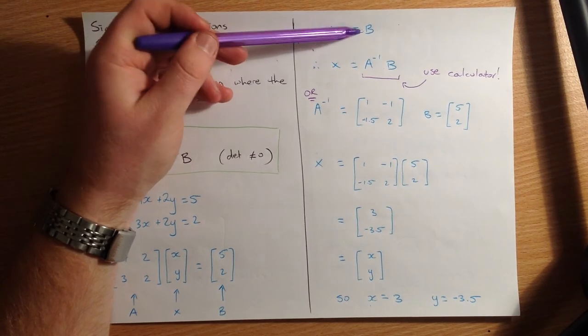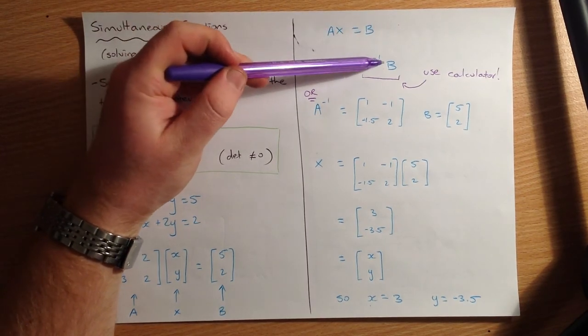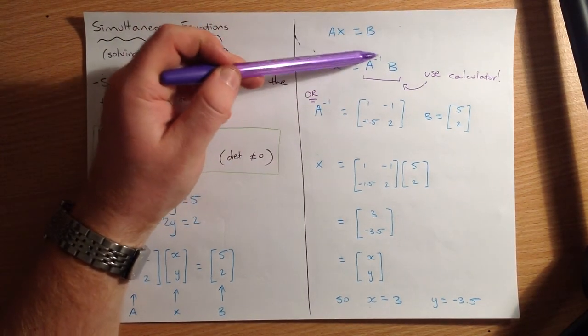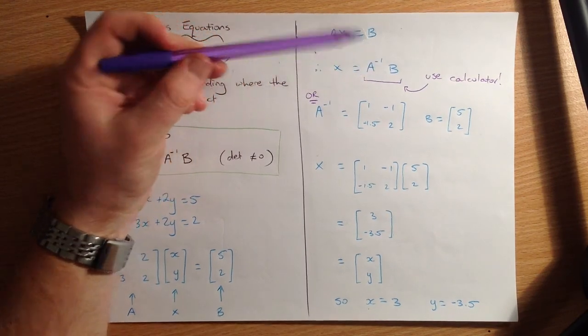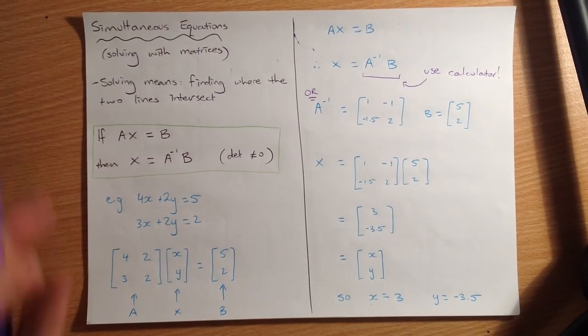So for instance, if I have AX equals B, to solve it, X equals A inverse B. We can just put this in our calculator, A inverse B, once we've stored what A and B are. And the calculator will do the rest of the work for us.